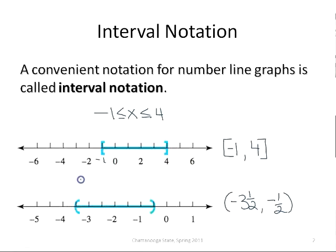The second one, where we do not include the end points, would be the same type of inequality, except it wouldn't have the little equal mark under the inequality symbol. Here our x is between negative 3 and a half and negative 1 half.